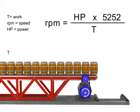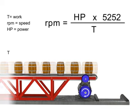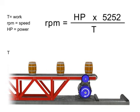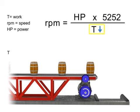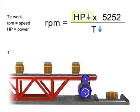Similarly, the opposite is true. If we wish speed to remain constant and decrease torque, then horsepower also decreases.